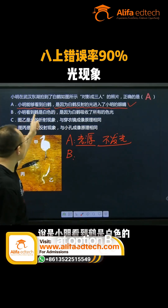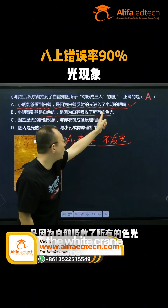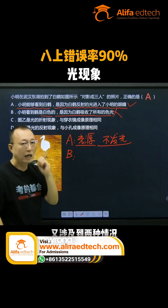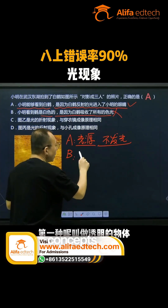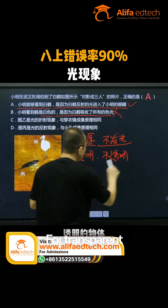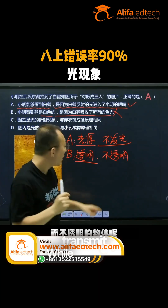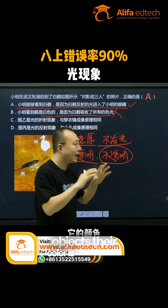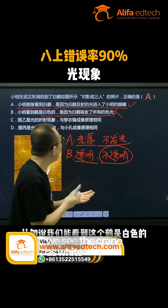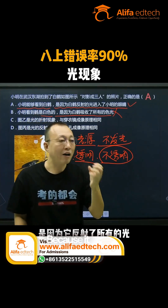Let's look at option B. It says: Xiaoming sees the crane as white because the white crane absorbs all coloured light. This statement is definitely wrong. This involves two different concepts: transparent objects and opaque objects. For transparent objects, their colour is determined by the light they transmit. While for opaque objects, their colour is determined by the light they reflect. We see the crane as white because it reflects all light.